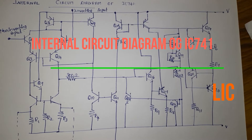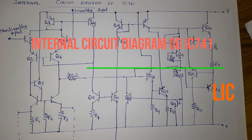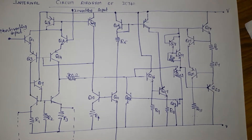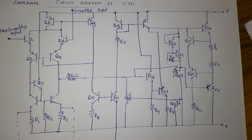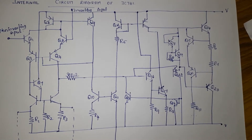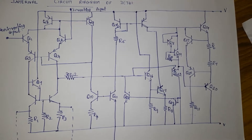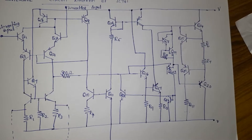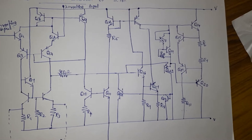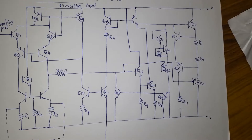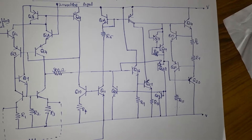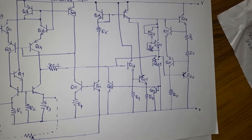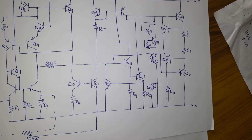Welcome friends. In this video we are going to discuss about the internal structure of IC741. This diagram helps to understand all the internal stages along with their capabilities and limitations. The most important point about this equivalence circuit is that all IC741 models have the same equivalence circuits. The internal circuit diagram is divided into 4 stages.